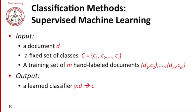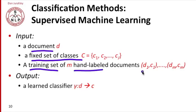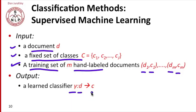In supervised machine learning, we have a document D and a fixed set of classes, just as before. But we also need a training set — some documents that have been hand-labeled for their class. So for document one we know it's in class one, for document two it's in some other class, and for document M we have a label for its class. Given the document, the set of classes, and the training set of hand-labeled documents, the goal of machine learning is to produce a classifier — which we'll call gamma — a function that, given a new document, gives us its class.